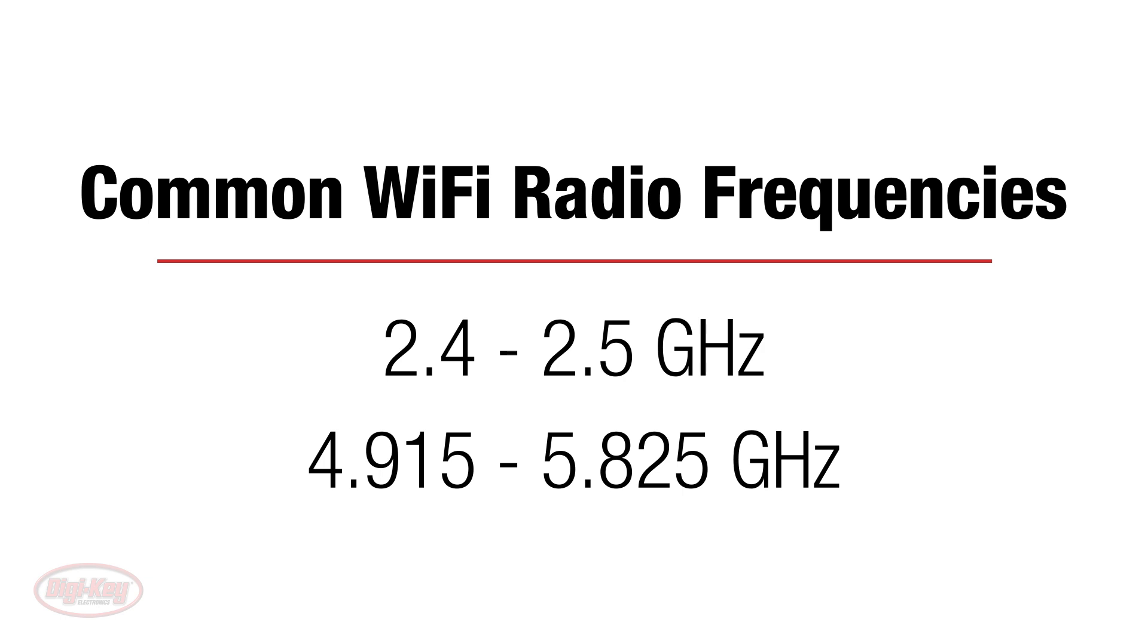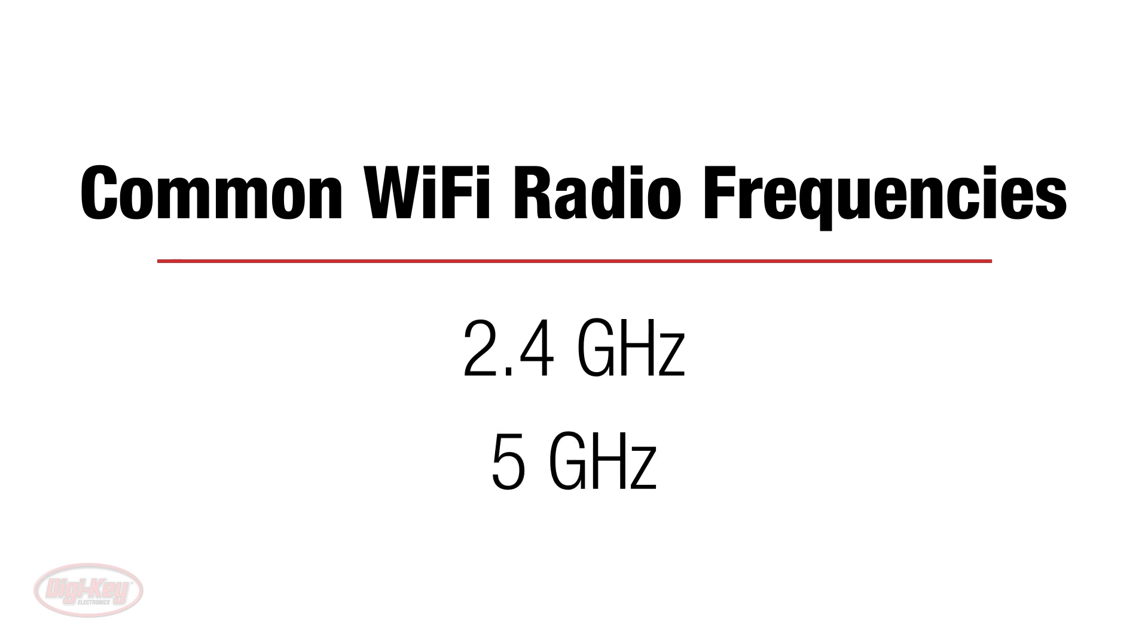The most common WiFi radio frequencies are in the 2.4 to 2.5 GHz spectrum and the 4.915 and 5.825 GHz spectrum, which are commonly referred to as 2.4 GHz and 5 GHz bands respectively.